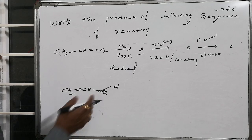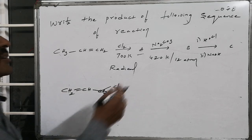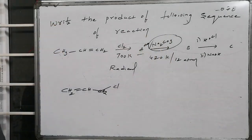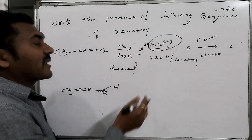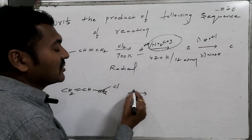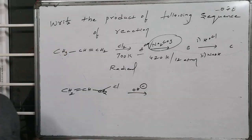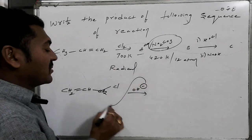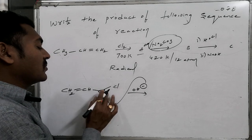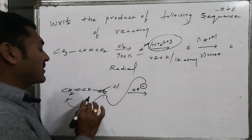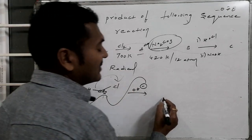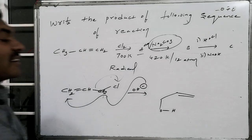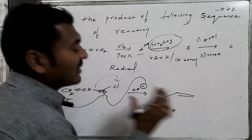...the allylic cation is stabilized by resonance. Aqueous sodium carbonate is a combination of sodium hydroxide and carbonic acid, generating OH⁻. At higher temperature, this small amount of OH⁻ acts as a nucleophile, substituting at the allylic position via C–Cl cleavage. This results in allylic alcohol (B) formation.